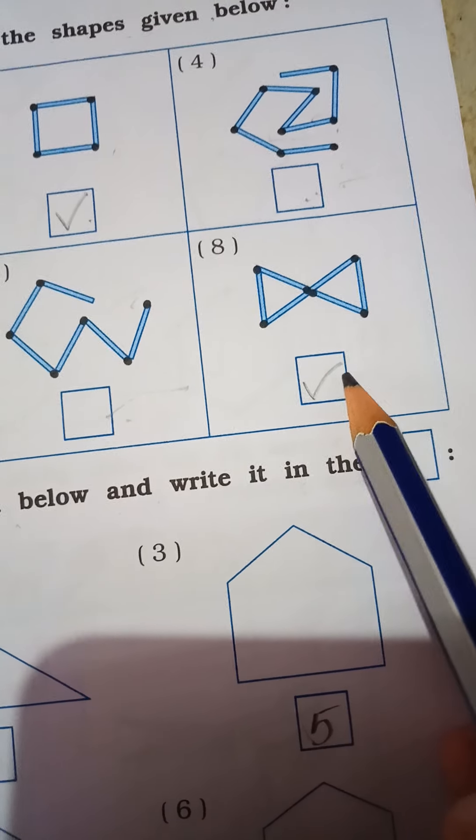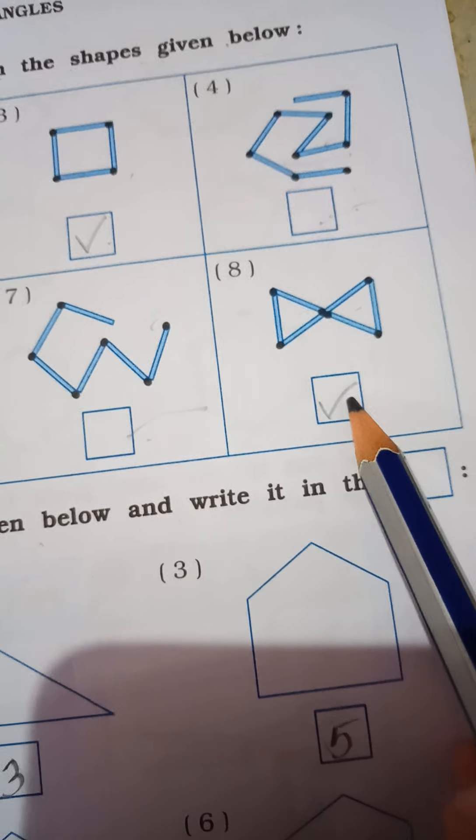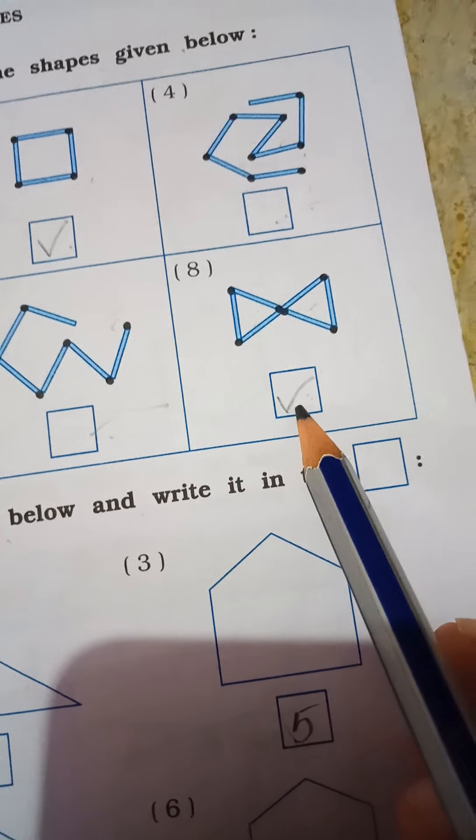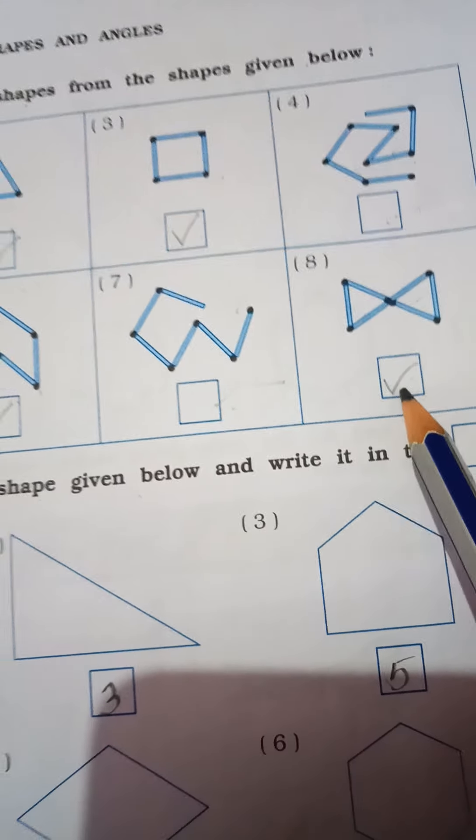This is open shape. And yaati khullu chai. So leave this box. And come on, eight number. Eight number also closed shape. Two triangles make. And this is the closed. So we have to tick here. Okay students, understand?